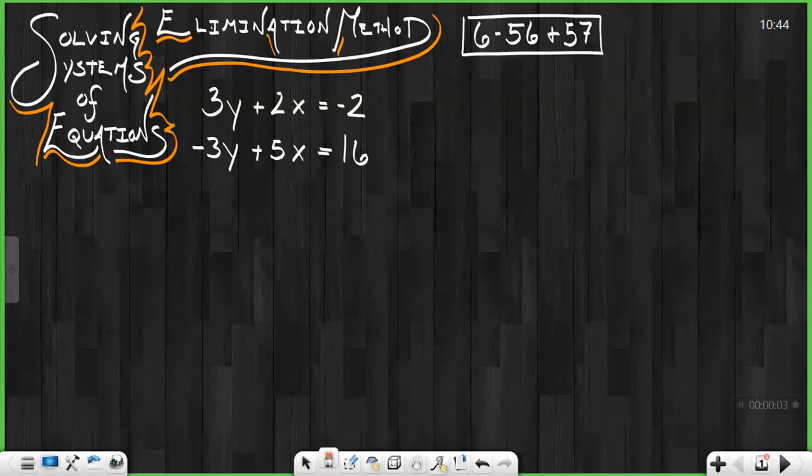We're taking a look at solving a system of equations using the elimination method today. We're on problems 656 and 657. In 656 they present this system of equations to us. We notice we have two equations with two variables each, but these two equations are not solved for one of the variables. We need it solved for one of the variables to use the substitution method or to use the equal values method.